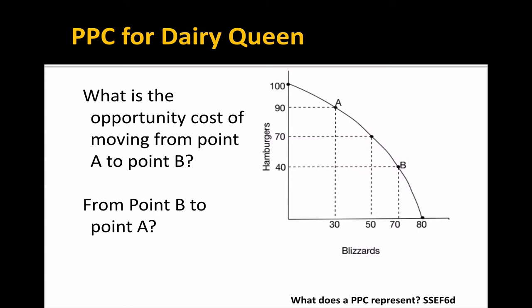Opportunity cost is what you give up. So when I move from point A to point B, I gain 40 blizzards, but I give up 50 hamburgers because I go from 90 to 40. So the answer would be 50 hamburgers.